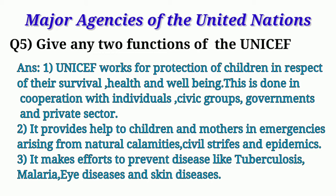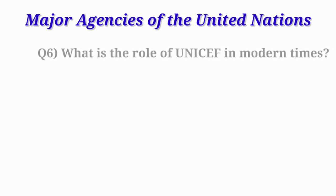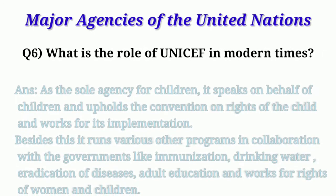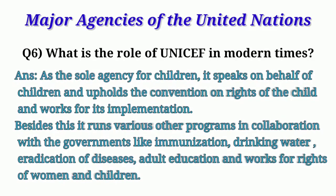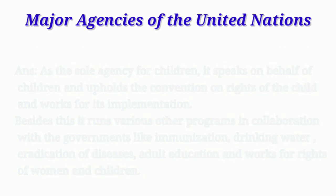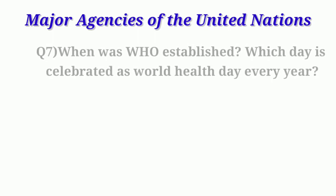Third function: it makes efforts to prevent diseases like tuberculosis, malaria, eye disease, and skin disease. Question 6: What is the role of UNICEF in modern times? As the sole agency for children, it speaks on behalf of the children, upholds the convention on rights of the child, and works for its implementation. It also runs various programs in collaboration with governments like immunization, drinking water, eradication of diseases, adult education, and works for the rights of women and children.